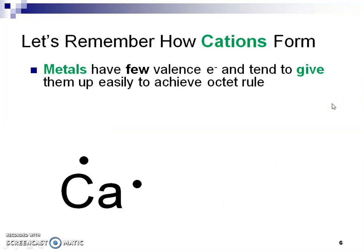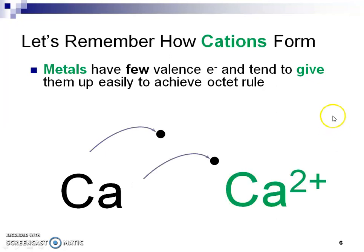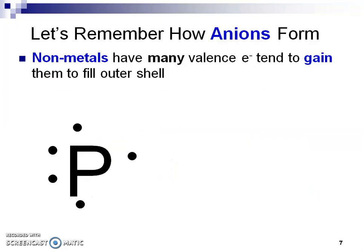First let's remember how these cations are formed. Remember that metals tend to have few valence electrons, so they're going to give up their valence electrons to achieve that octet rule. We did this in the last section, so if you need to revisit that section, you should do so. That calcium is going to lose two electrons and become that plus-two charge. Now, how are we going to name this? It's going to stay calcium. Metals stay their same name.